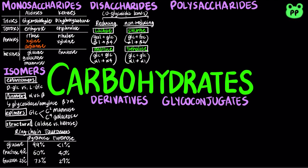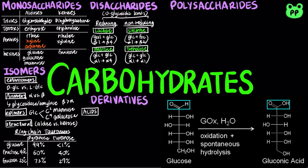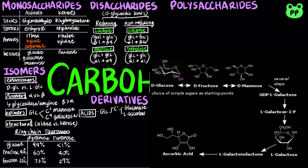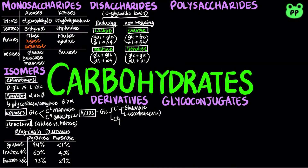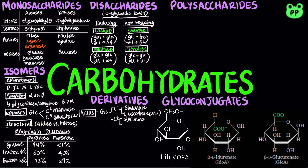In addition to simple sugars such as glucose, galactose, and mannose, there are sugar derivatives in which a hydroxyl group in the parent compound is replaced with another substituent, or a carbon atom is oxidized to a carboxyl group, as in acidic sugars. Oxidation of C1 carbon of glucose produces gluconate. 6-phosphogluconate is an intermediate of the pentose phosphate pathway. L-ascorbate, or vitamin C, is derived from L-gluconate. Oxidation at carbon-6 forms the uronic acid, such as glucuronate and L-iduronate.